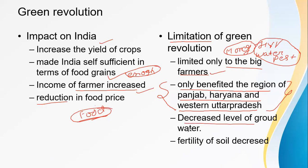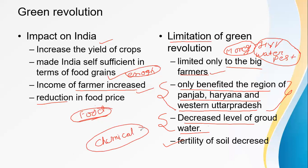Another limitation is the decrease in the level of groundwater. Because of the Green Revolution, most farmers extracted water from the ground using bore wells, and as a result, our groundwater level has significantly decreased. Additionally, the fertility of the soil was decreased. When we use chemical fertilizers on land, they increase soil fertility temporarily — for about 5 to 6 months — but afterwards the fertility decreases significantly. Because of heavy use of chemical fertilizers, the quality of soil was decreased.